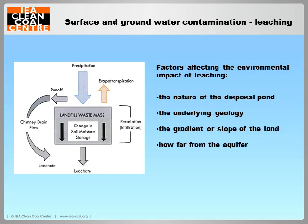Leaching is a slow and complex process, which depends on the chemical composition of the compound, solution pH, availability of the constituent for leaching, and the age of the ash. In addition, subsequent chemical reactions and secondary mineral formation can further modify leaching characteristics. At a CCW disposal site, the environmental impact of leaching may be affected by the size of the disposal pond, pond depth, and the amount of pressure the waste creates. The underlying geology, gradient or slope of the land, and the distance of an aquifer or underground stream beneath the pond or landfill might also influence leaching.